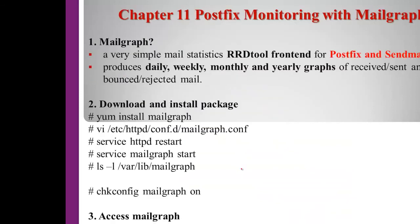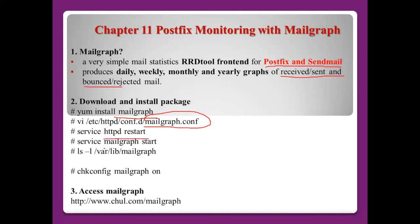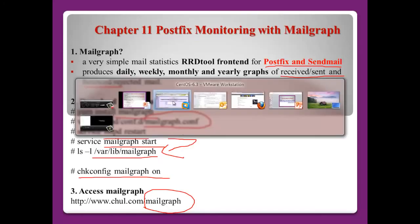Chapter 11: Postfix monitoring with Mailgraph. Mailgraph is a very simple mail statistics RRDtool frontend for Postfix and Sendmail. It produces daily, weekly, monthly, and yearly graphs for sent, received, bounced, and rejected mail. Bounced mail means mail returned to the sender. Download and install Mailgraph, configure it in '/etc/httpd.conf', restart the web server and Mailgraph. Mailgraph saves information to '/var/lib/mailgraph'. To run permanently, register with 'chkconfig mailgraph on'.